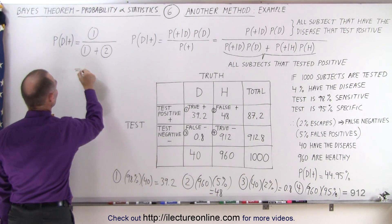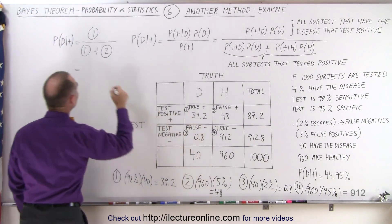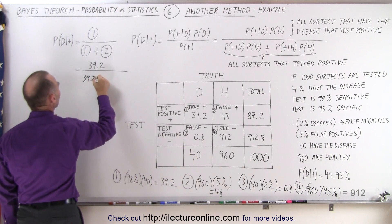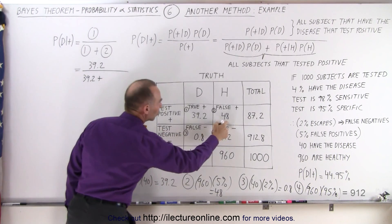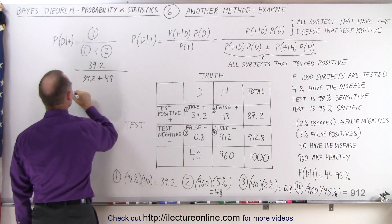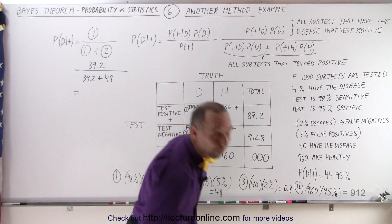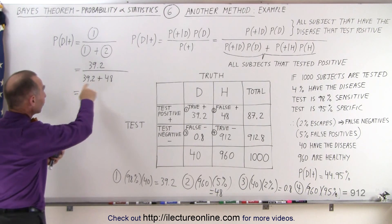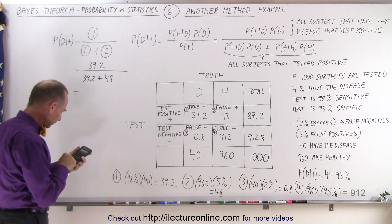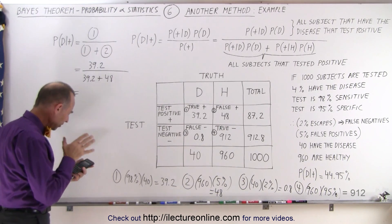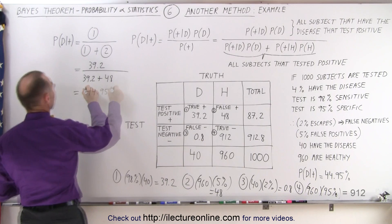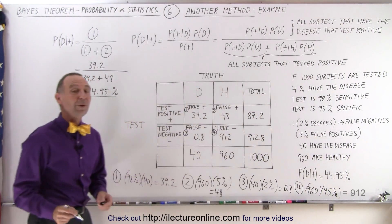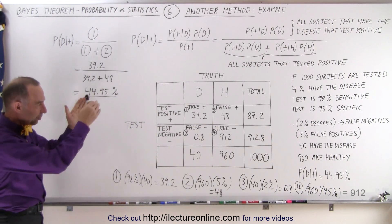Now let's go ahead and plug that into the equation. This is equal to the value in box number one, which is 39.2, divided by the sum of box number one plus box number two, which is 48. So we take 39.2 divided by 87.2, and we get 44.95% — which is the exact same number we got on the previous video when we used the other method.